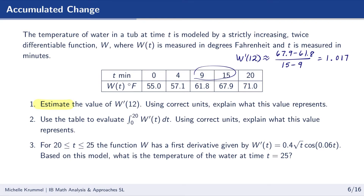The function w of t is measured in degrees Fahrenheit, and we're finding the rate of change with respect to minutes t, so the units are degrees Fahrenheit per minute. This represents an instantaneous rate of change. At time t equals 12 minutes, the temperature of the water in the tub is increasing by about 1.017 degrees Fahrenheit per minute.